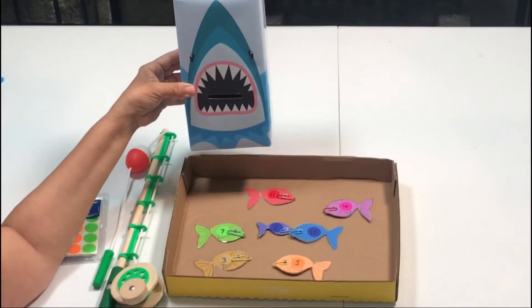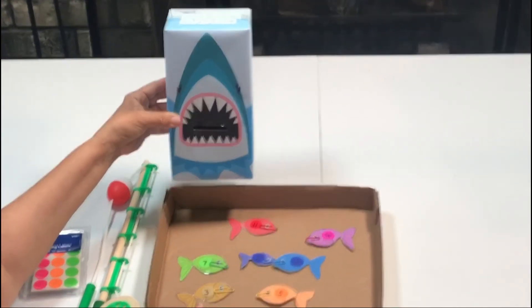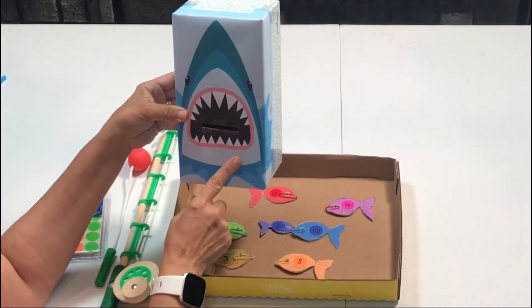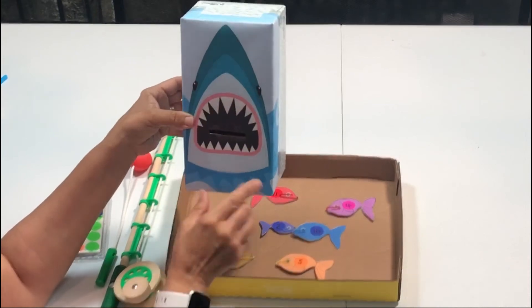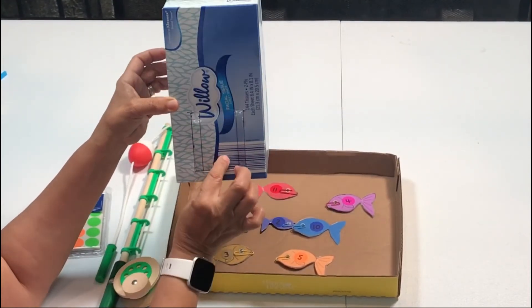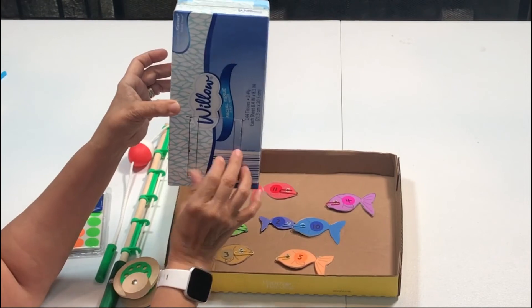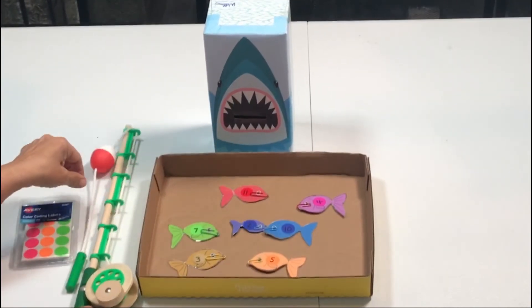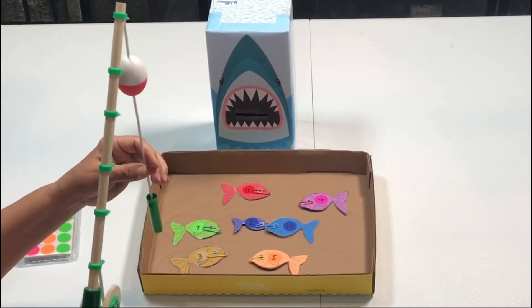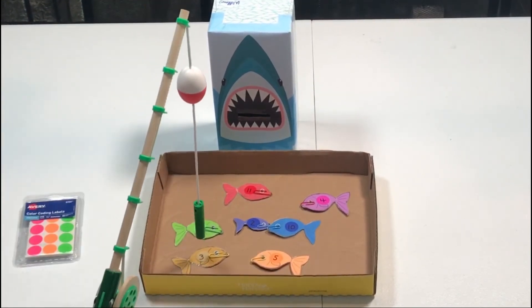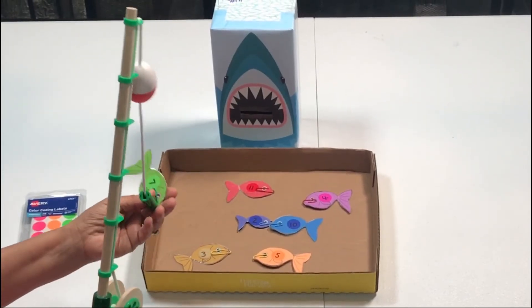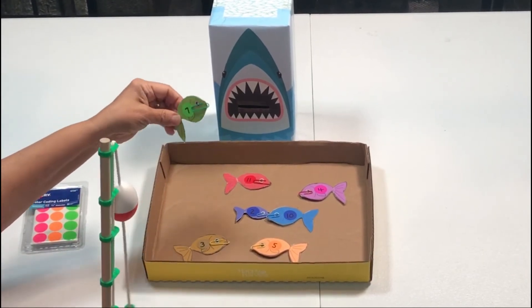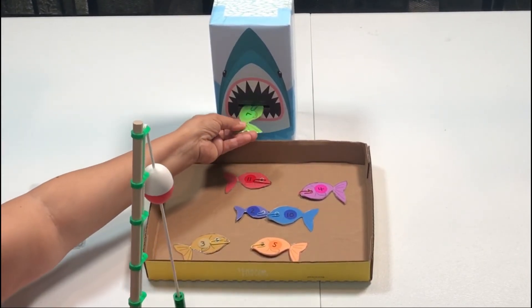For this activity, this is a number recognition activity. I put together this box, a tissue box. I printed this picture of a shark. I have a little opening in the back and we are going to use this little fishing rod and we're going to pick up a fish and we're going to say the number that is on the fish. This is number seven and then we're going to feed the shark.